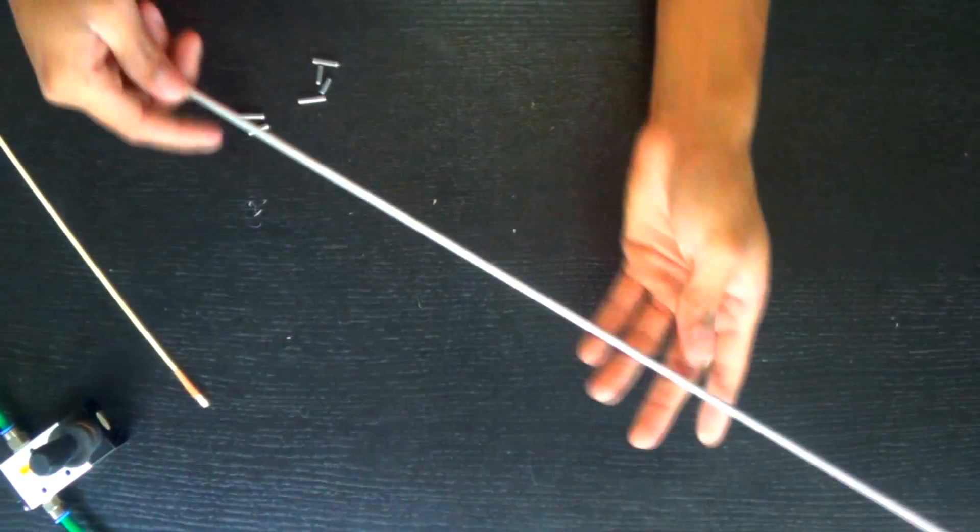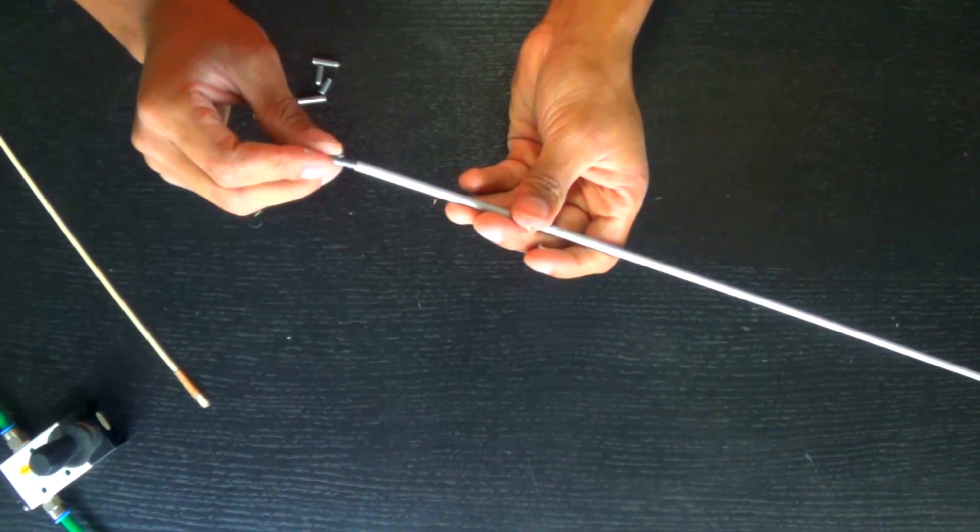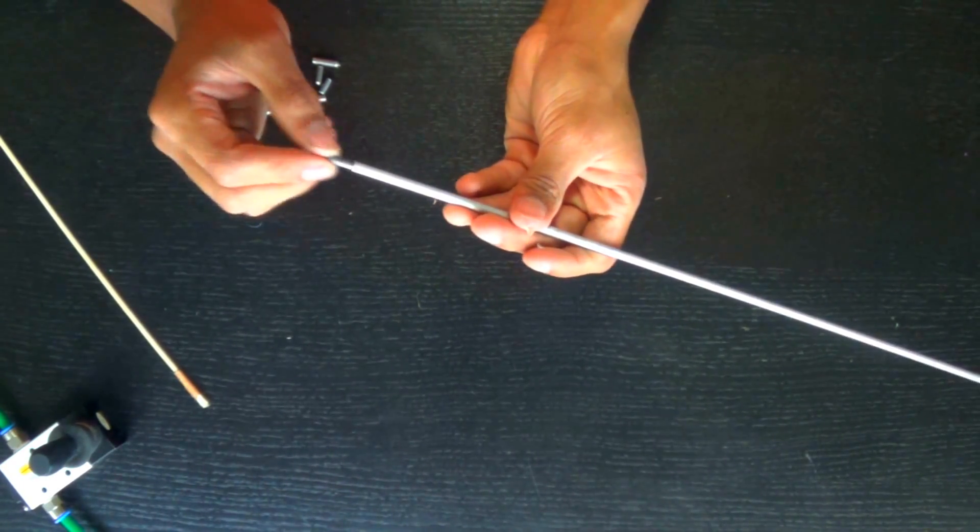So I cut the one that's not hollow into smaller pieces, bullet sized I guess, and it fits inside the barrel to make an airtight seal.